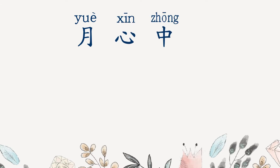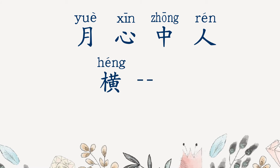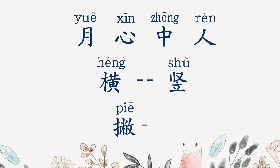Let's do a review: 月, 心, 中, 人 — and the stroke order rules. First, write the horizontal line 横 before the vertical line 竖. Second, write the left falling stroke 撇 before the right falling stroke 捺. Please remember to write these characters multiple times so you can recognize them easily in the future.